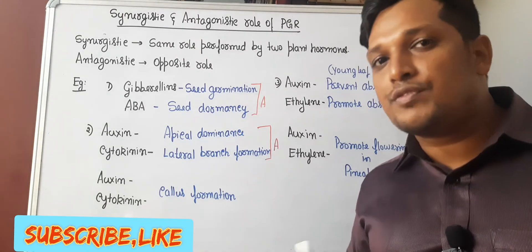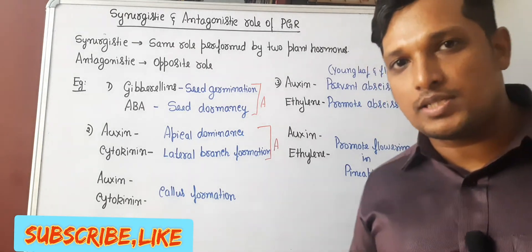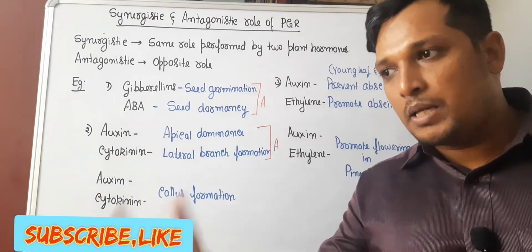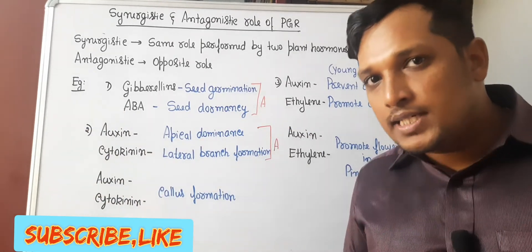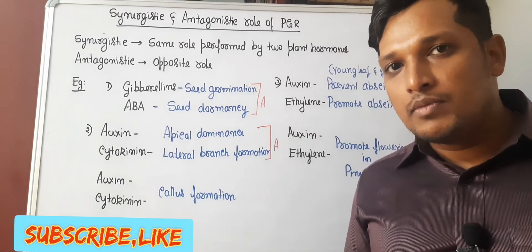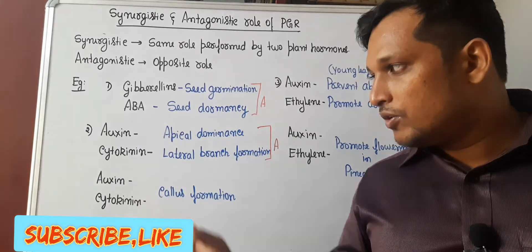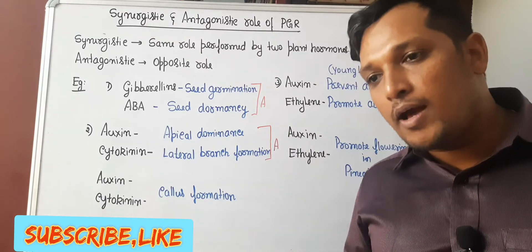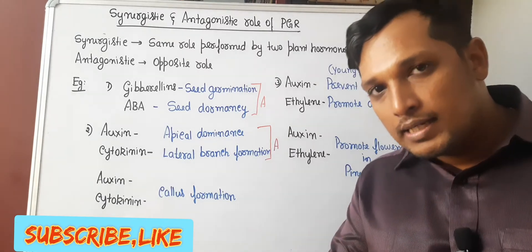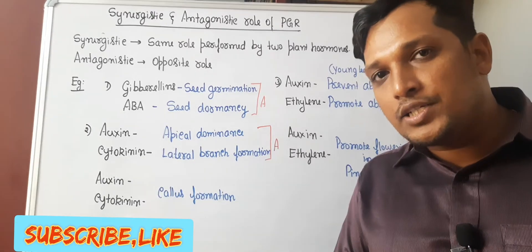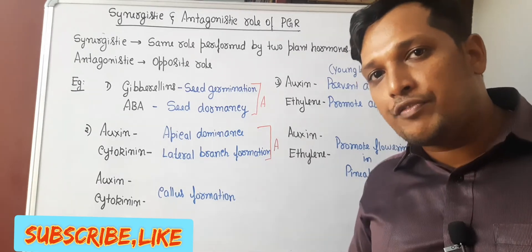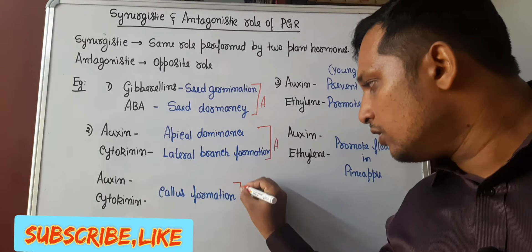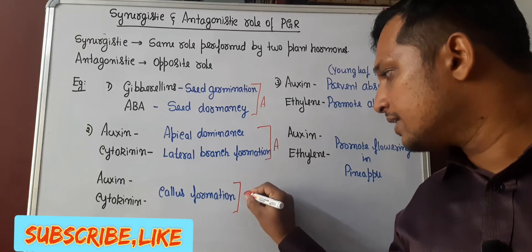What is callus formation? If you take any differentiated tissue, like a pith cell, and culture it in a culture medium along with auxin and cytokinin, then both have the same role — they convert that differentiated tissue into a mass of undifferentiated tissue known as callus.